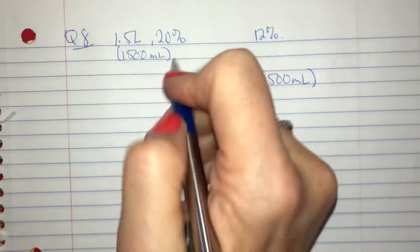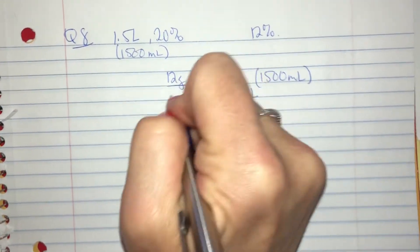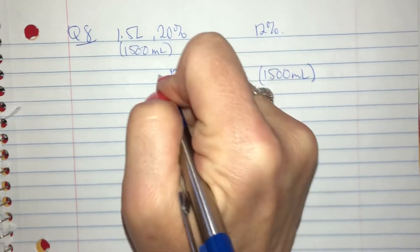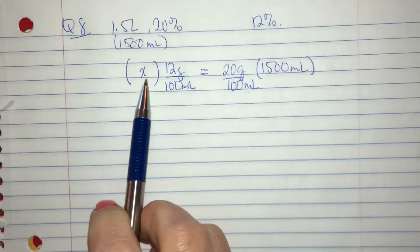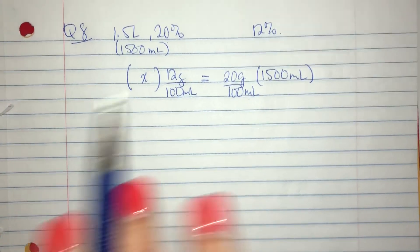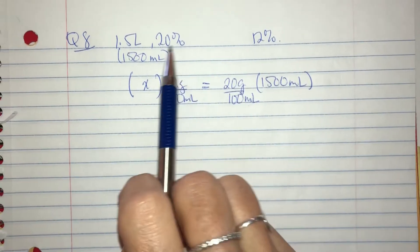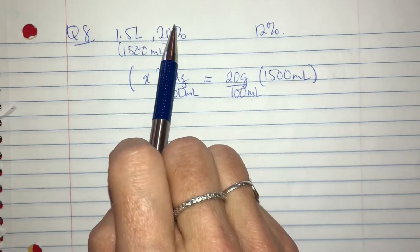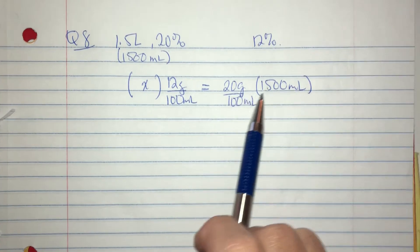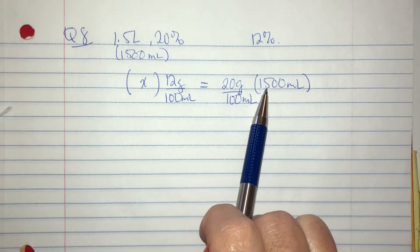Okay, what I want is 12 grams over 100 mils but I don't know how much solution I'm going to end up with at the end. Okay, so I've taken this one that I know, 20 grams over 100 mils and I will have 1,500 mils in total.